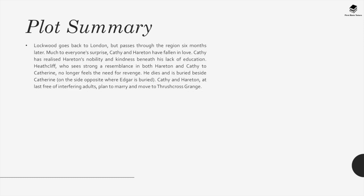This brings the story up to the present, when Lockwood has rented Thrushcross Grange. Lockwood goes back to London but passes through the region six months later. Much to everyone's surprise, Cathy and Hareton have fallen in love. Cathy has recognized Hareton's nobility and kindness beneath his lack of education. Heathcliff, seeing a strong resemblance in both Hareton and Cathy to Catherine, no longer feels the need for revenge. He dies and is buried beside Catherine. Cathy and Hareton, at last free of interfering adults, plan to marry and move to Thrushcross Grange.